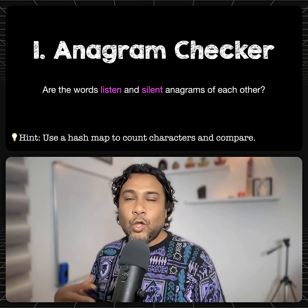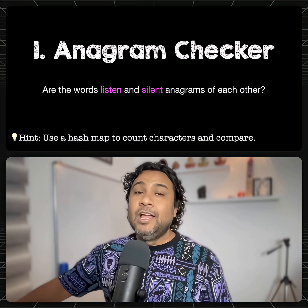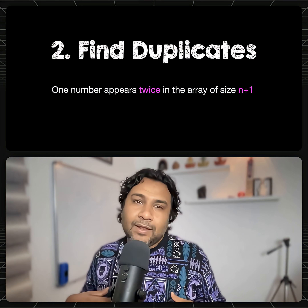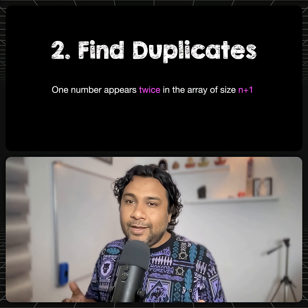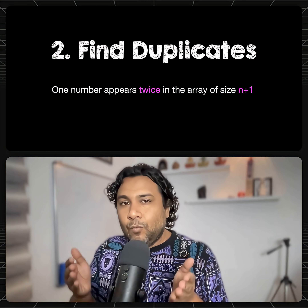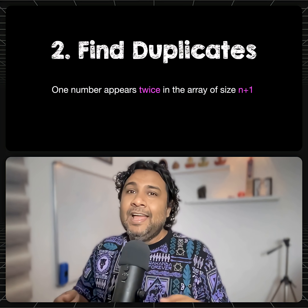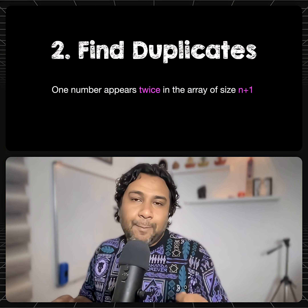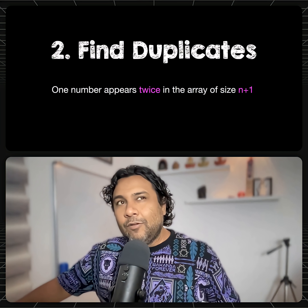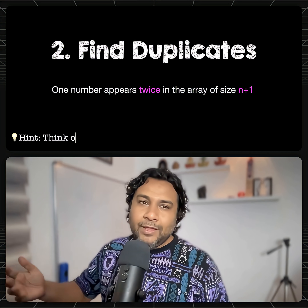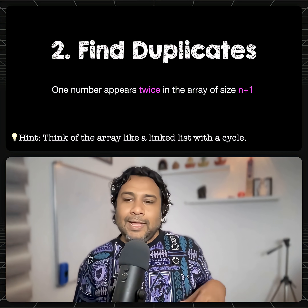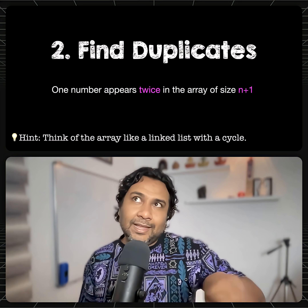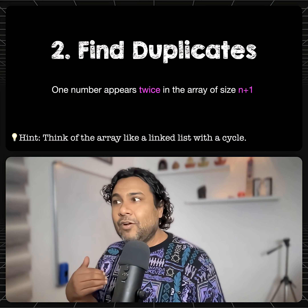The second challenge: find duplicates. Given an array of numbers, can you find out if one number appears twice, and if so, tell which number has appeared more than once? One way to think about solving it: think of the array like a linked list with a cycle. That's just a hint, but you can think of many other ways to solve this problem.